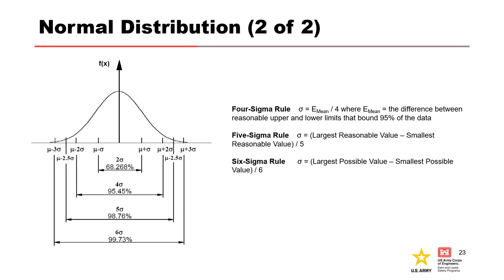Two standard deviations covers approximately 68% of the area beneath the curve; four standard deviations covers about 95%; five standard deviations is over 98%; and six standard deviations is 99.7%. There are rules to estimate the standard deviation based on confidence in estimating the upper and lower limits of the data range. If there is 100% confidence in the limits, use the six sigma rule: take the largest value, subtract the smallest, and divide by six. For 99% confidence, use the five sigma rule; for 95% confidence, use the four sigma rule.